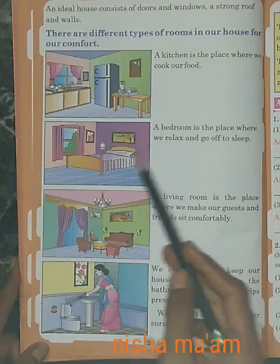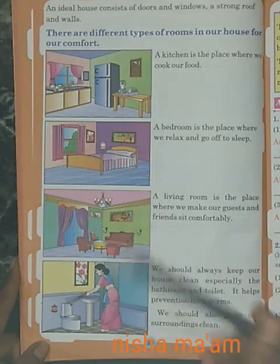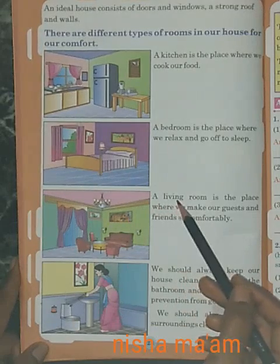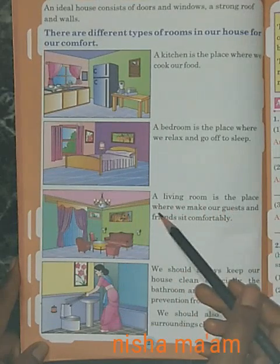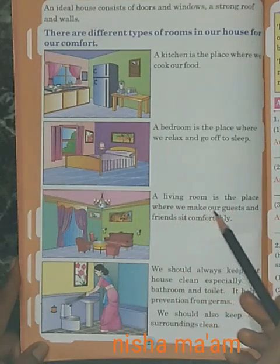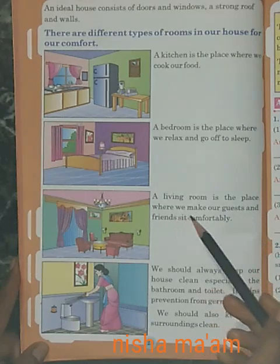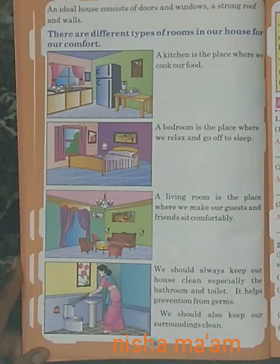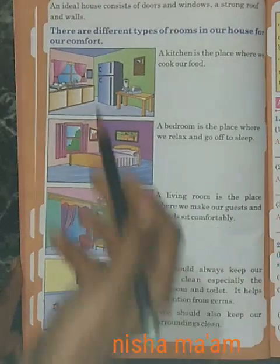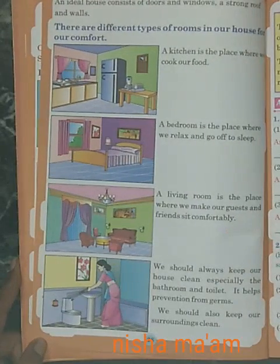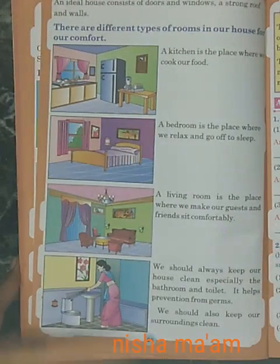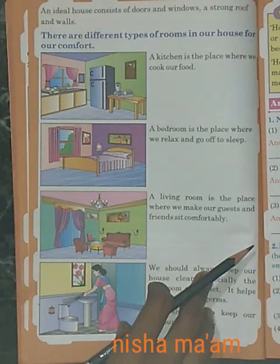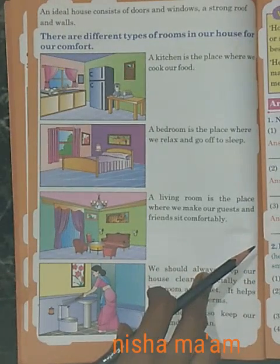Bedroom एक ऐसी जगह है जहां पे हम आराम करते हैं और सो जाते हैं। A living room is the place where we make our guests and friends sit comfortably. हम guests को bedroom या kitchen में नहीं बिठाते — उनको हम living room में बिठाते हैं, वहां बातें करते हैं, चाय-नाश्ता करते हैं।